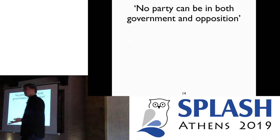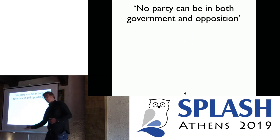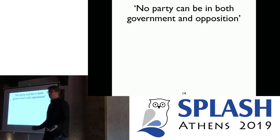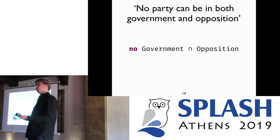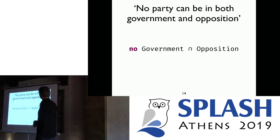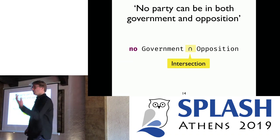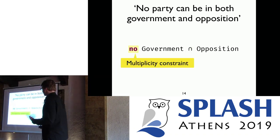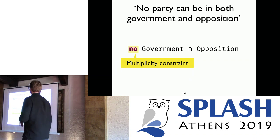Let's take a look at an example constraint. We want to express that no party can be in both government and opposition. We can express this as a purely relational constraint — no integer reasoning needed. We take the intersection of the government relation with the opposition relation, and then force that this intersection should not have any tuples.